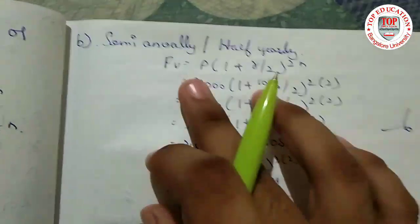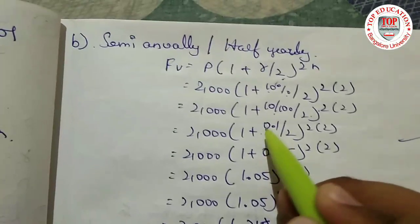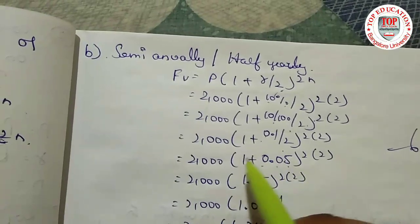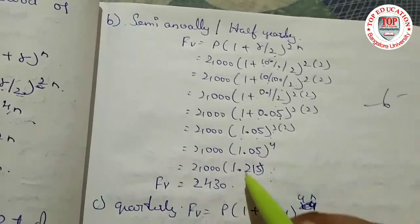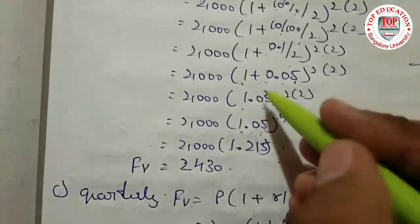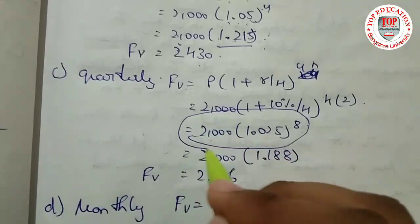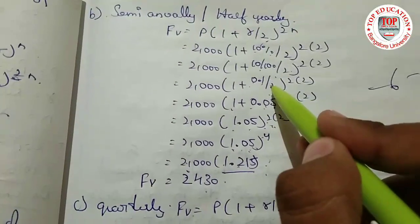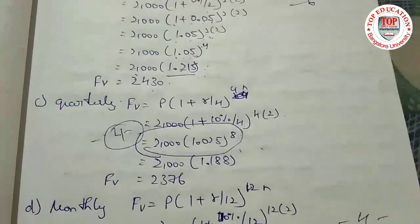For semi-annually or half-yearly: 10 divided by 100 divided by 2 gives 0.05. So 1 + 0.05 = 1.05. Two years times two is four, so we multiply 1.05 four times: 1.05 × 1.05 × 1.05 × 1.05. We get the answer. For quarterly, we similarly divide by 4 and multiply 1.025 eight times (4 × 2 = 8 steps).